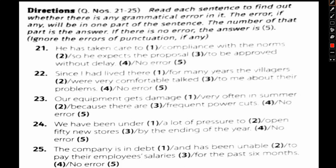Read each of the following sentences to find whether there is any grammatical error in it. The error, if any, will be in one part of the sentence. The number of that part is the answer. If there is no error, then the answer is five. Ignore all errors of punctuation, if any.